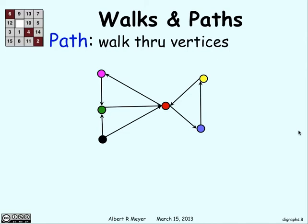A path, on the other hand, walks through vertices without repeating a single vertex. So, for example, we'll start at blue, you can go yellow,